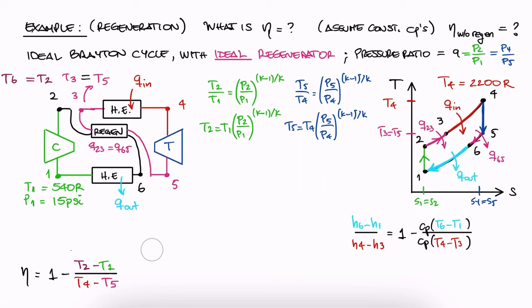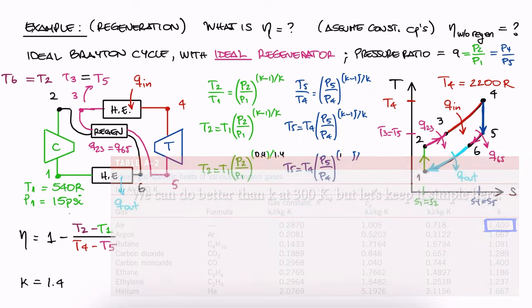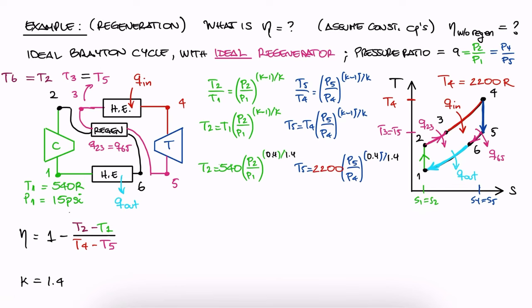With these, we see that we need to look up the specific heat ratio K for air, substitute the temperatures we have, and the pressure ratio to find T2 and T5. We substitute these in our efficiency expression, and we find an efficiency of 54%.